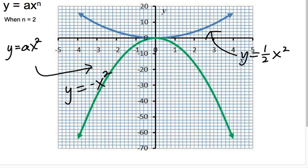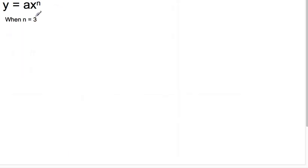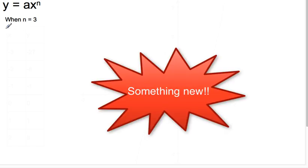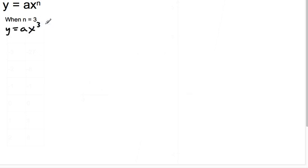Let's go ahead and take a look at the third case. So when our exponent is 3, we're going to have y equals ax to the third. So that's a cubed value. I wonder what that graph looks like.